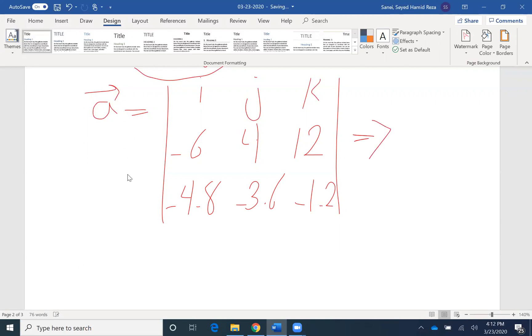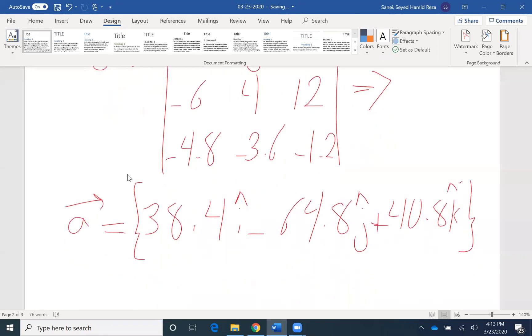Therefore, our acceleration would be 38.4i, negative 4.8j, and 40.8k. And the unit for acceleration would be meter per second squared.